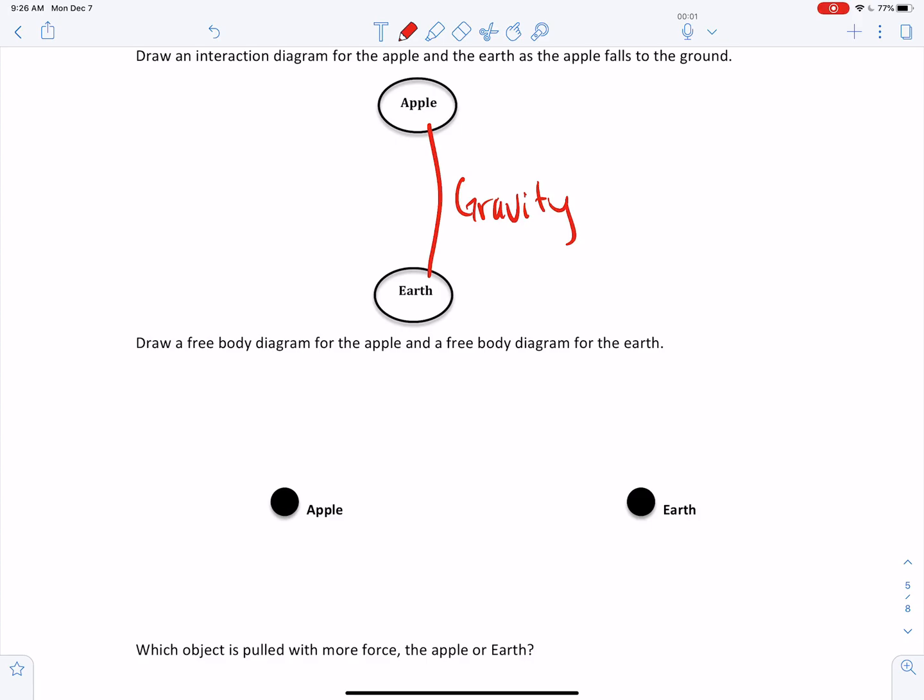Okay, so a free body diagram of the apple would just have this downward pull of gravity. And it's going to be from the earth. But we could also draw a free body diagram of the earth. And the earth would be pulled upwards by the force of gravity from the apple. This is what we mean when we say every action has an equal and opposite reaction. These forces, this interaction of gravity comes in pairs, a pair of forces.